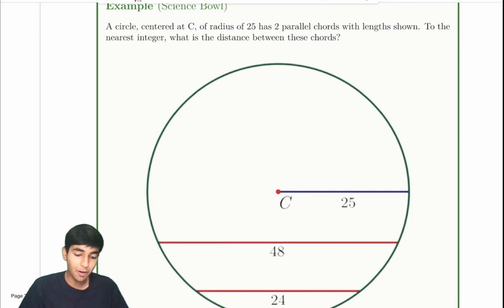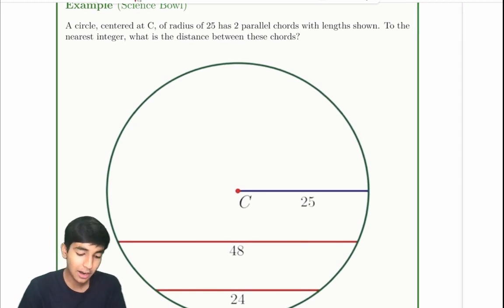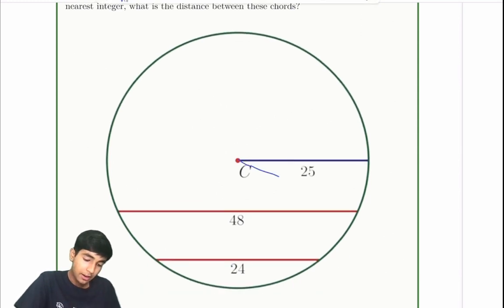Well, now let's explore this problem over here. A circle centered at C of radius 25 has two parallel chords with lengths shown. To the nearest integer, what is the distance between these chords? Again, the fundamental thing that a circle tells you is that the center is equidistant from every point. And that's kind of the key idea here. The center is equidistant from every point. Now this radius is 25, right?